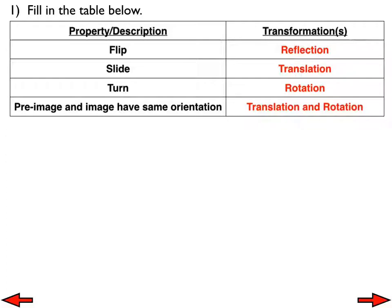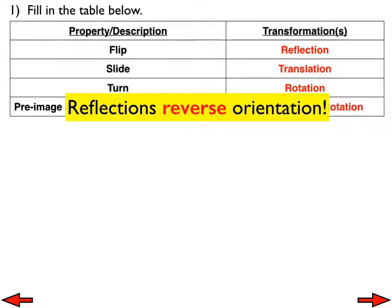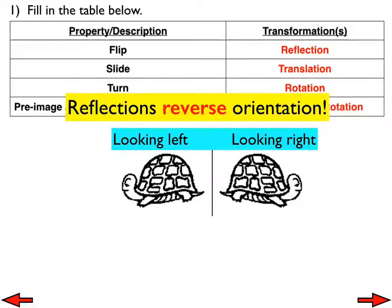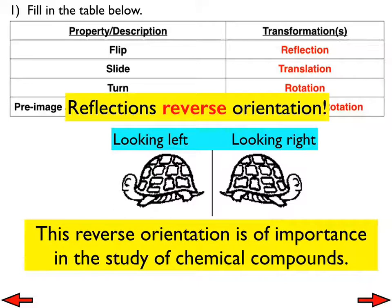What does 'same orientation' mean? Reflections reverse the orientation — the orientation does not stay the same. Take a look at this picture: I have a turtle, and I reflected it. The turtle on the right, the pre-image, is looking to the right. When I reflected it, the turtle is looking the other direction — that's what we mean by reverse orientation. When you translate or rotate a shape, it doesn't reverse the orientation; it's still looking the same way. This reverse orientation is also of importance in the study of chemical compounds.